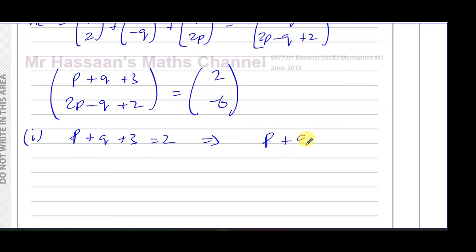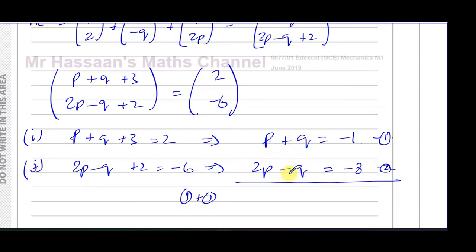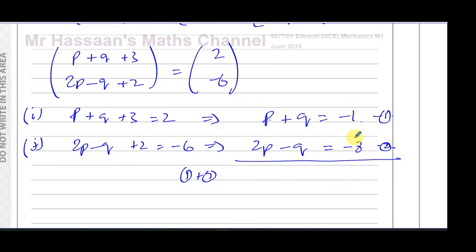Now I can set up the equations from i. So I know that p + q + 3 equals 2, so that leaves the equation p + q equals -1. That's equation 1. And then from the j components, I have 2p - q + 2 equals -6, so that gives me the equation 2p - q equals -8. That's equation number 2. If I add the two equations together, because I have the same coefficient but different signs in front of the q, that will be eliminated. So I'm going to have 3p equals -9. Therefore, p equals -3.